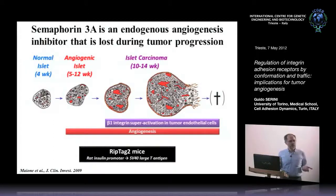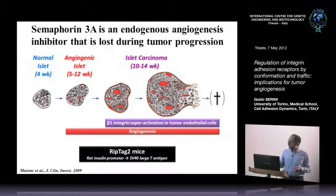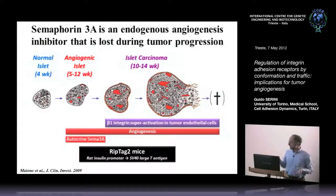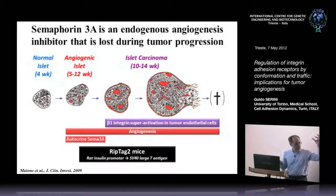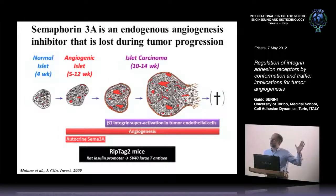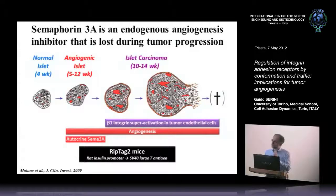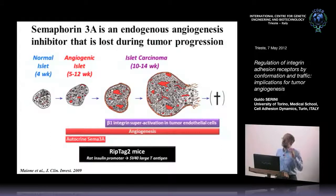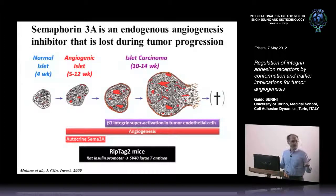In the carcinoma stage—but not at the angiogenic islet stage—we observe beta-1 superactivation in tumor endothelial cells: the amount of active beta-1 integrin is very high. This fits with the observation that while SEMA3A levels increase at the angiogenic switch, they are then switched off during tumor progression, and this switching off sharply correlates with beta-1 integrin superactivation. We conclude that the shutoff of semaphorins during tumor angiogenesis is responsible for this superactivation.